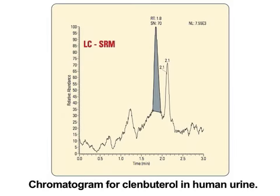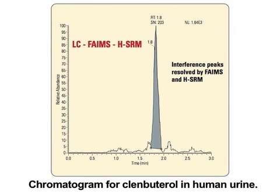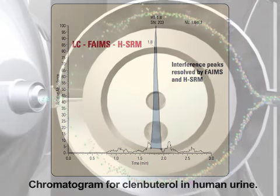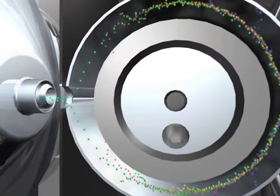As you can see here, this first chromatogram shows a lot of co-eluting interferences and chemical background, in addition to the analyte of interest. When we use FAIMS, we only let the analyte of interest into the mass spec, and so those other interferences have been removed.